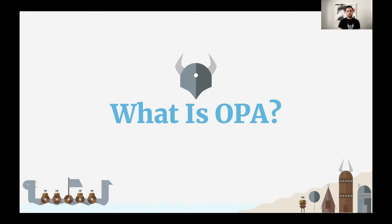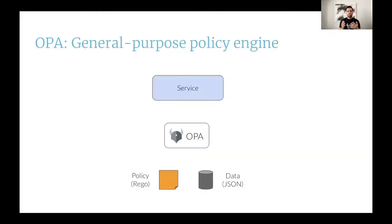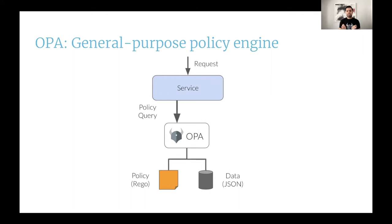Let's understand this a little more using this figure. Imagine you have a service — this can be any service at all. It can be your own custom service, Envoy, Istio, a Kubernetes API server, any service at all. Whenever your service gets a request, it's going to ask OPA for a policy decision by executing a query. OPA will use the policy and the data it has access to in order to evaluate this query, and then it will return a decision back to your service where it gets enforced. You can see that we have decoupled the policy decision making and the policy enforcement.